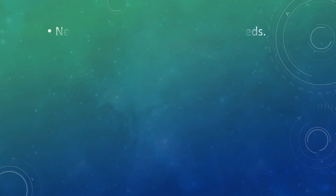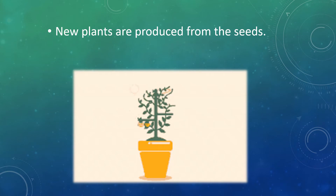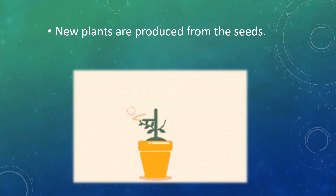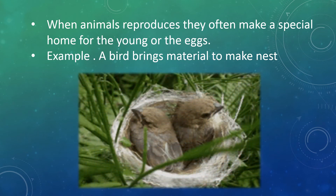New plants are produced from seeds — this is one example of reproduction. When animals reproduce, they often make a special home for their young or eggs. For example, a bird brings material to make a nest.